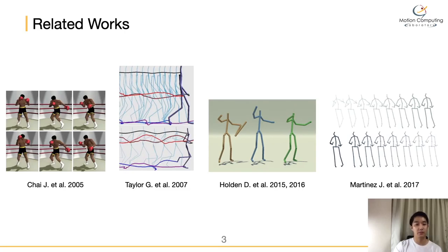Recently, with the development of deep learning technology, a method of constructing a motion manifold by using a convolutional neural network-based encoder was introduced by Holden. But because their motion manifold cannot know the prior, it is impossible to control in the latent space.